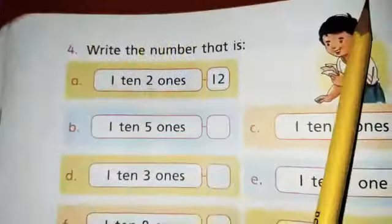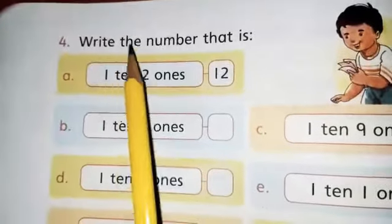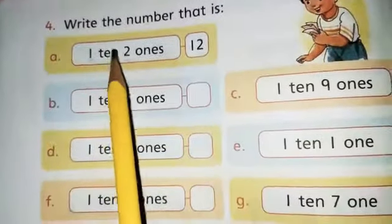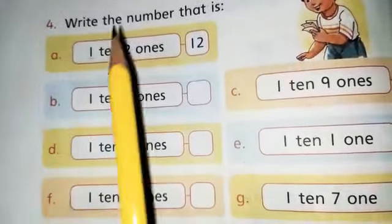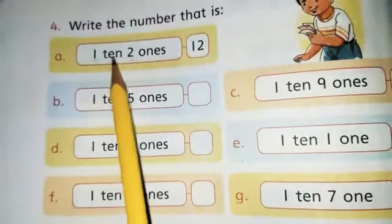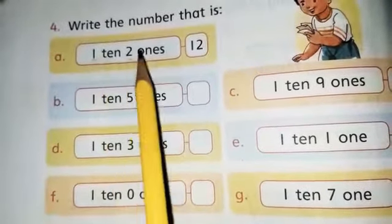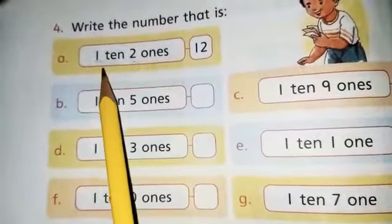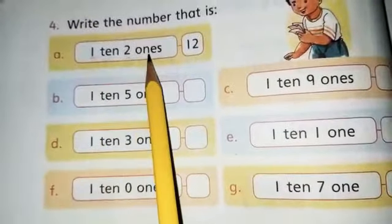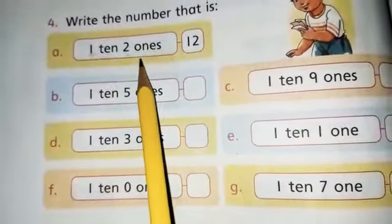So write down date and day first. Question number four: write the number that is one ten two ones. Students one ten becomes ten and two ones become two, so ten plus two equals twelve. Ten plus two equals twelve.